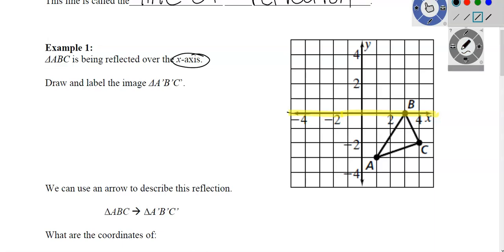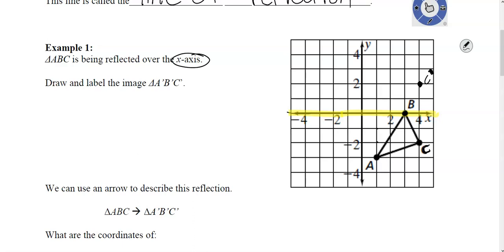The x-axis is basically your mirror — you are going to flip the figure over to the other side. For example, point C went down to negative two, so it's going to go up two, giving you new C-prime. Point B is already on the line, so B stays there. Point A went one, two, three down, so it goes one, two, three up to give A-prime. Then we draw our new figure.